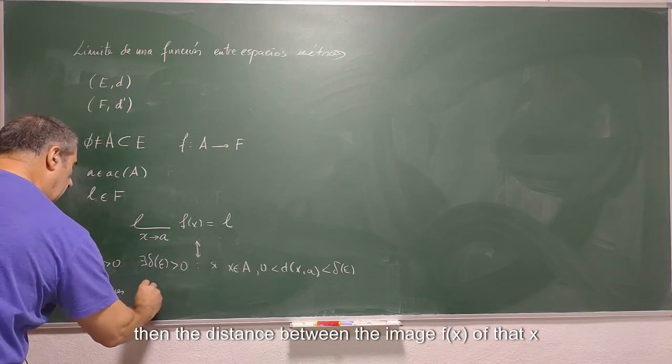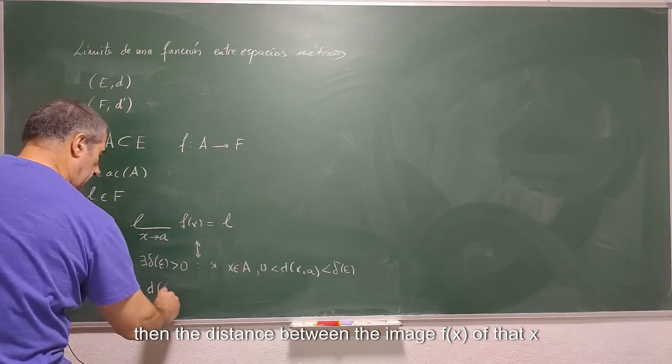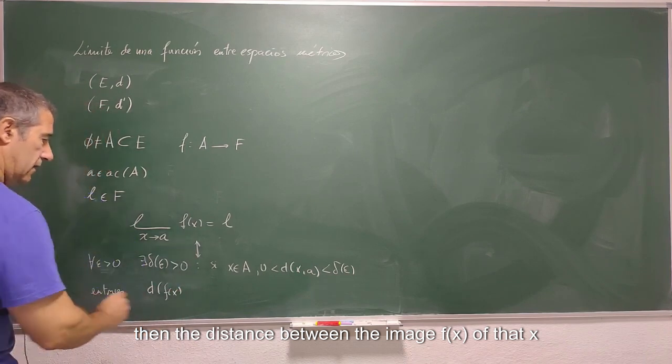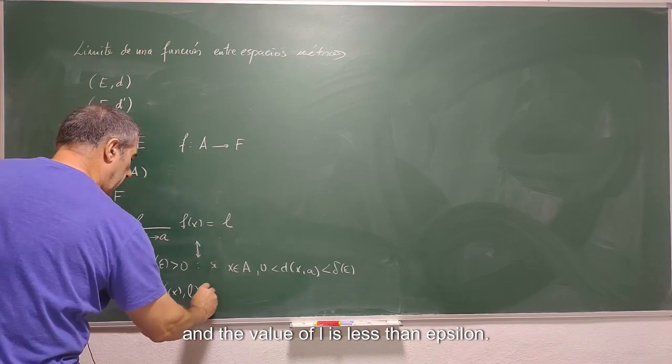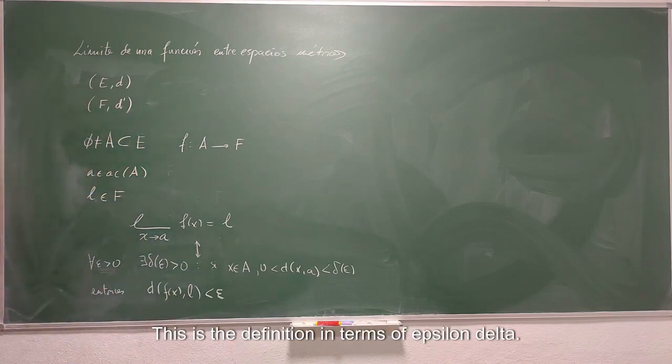Then the distance between the image f of x of that x and the value of L is less than epsilon. This is the definition in terms of epsilon delta.